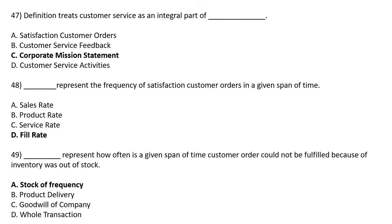DASH represents how often, in a given span of time, a customer order is satisfied — it represents the frequency of customer order satisfaction in a given span of time — Option A: Sales Rate, Option B: Product Rate, Option C: Service Rate, Option D: Fill Rate. The correct answer is Option D: Fill Rate.